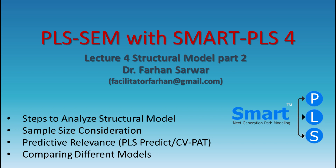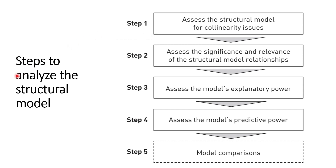Step number 4 covers predicted relevance using the PLS Predict algorithm. We will also see how to compare predicted relevance using CVPAT, and how to compare different models using BIC criteria and R-square values. In the previous video we discussed step 1 (collinearity issues), step 2 (significance and relevance of structural model relationships), and step 3 (model explanatory power using R-square).